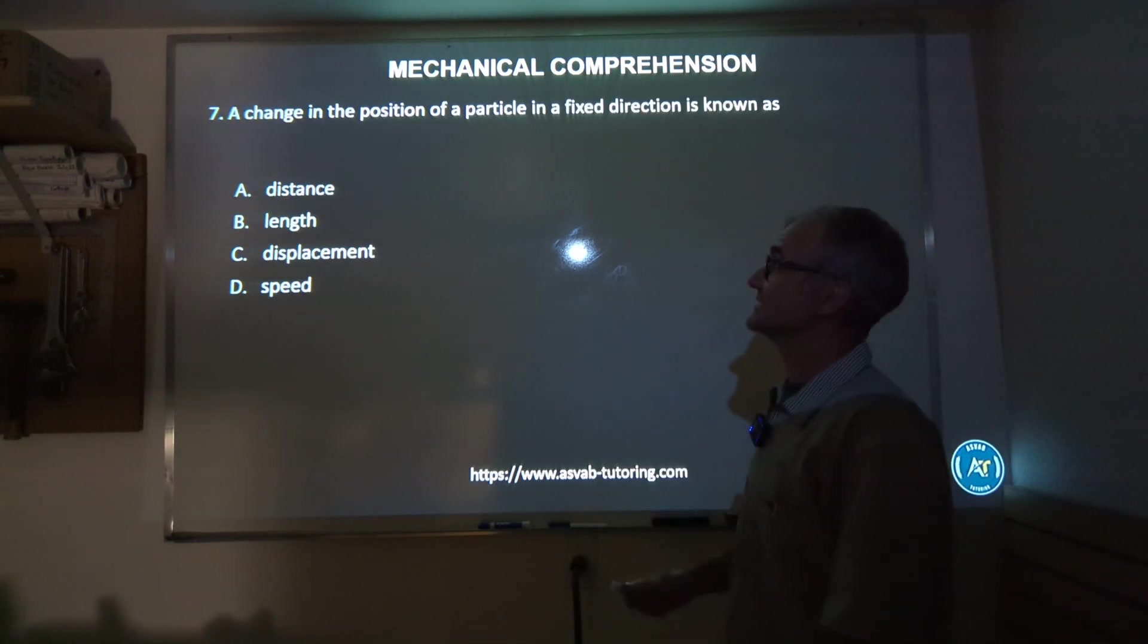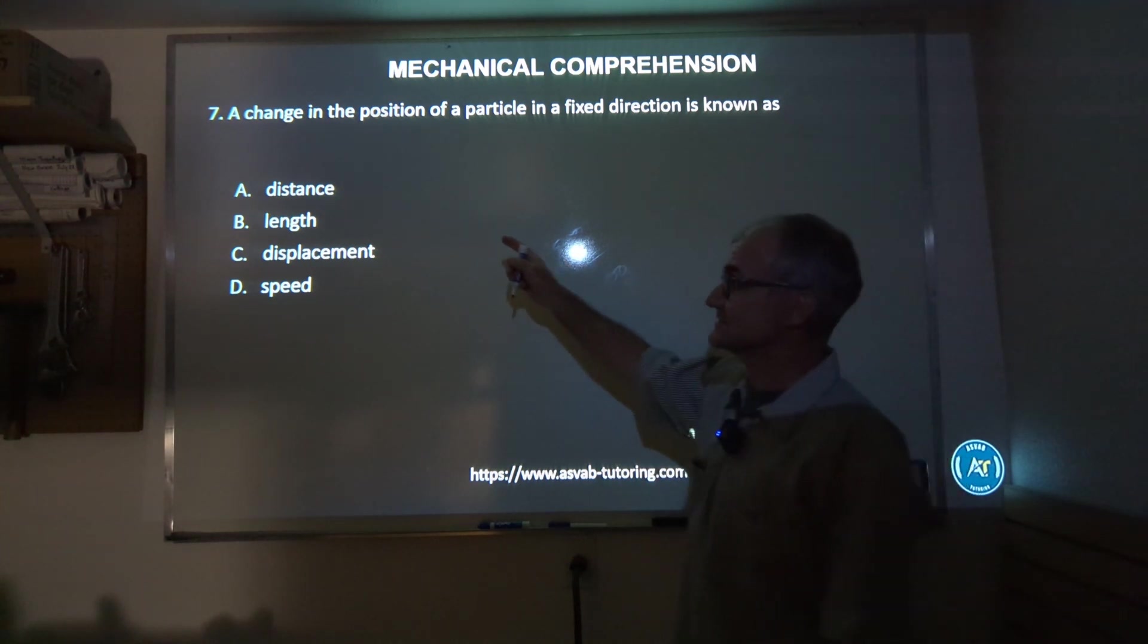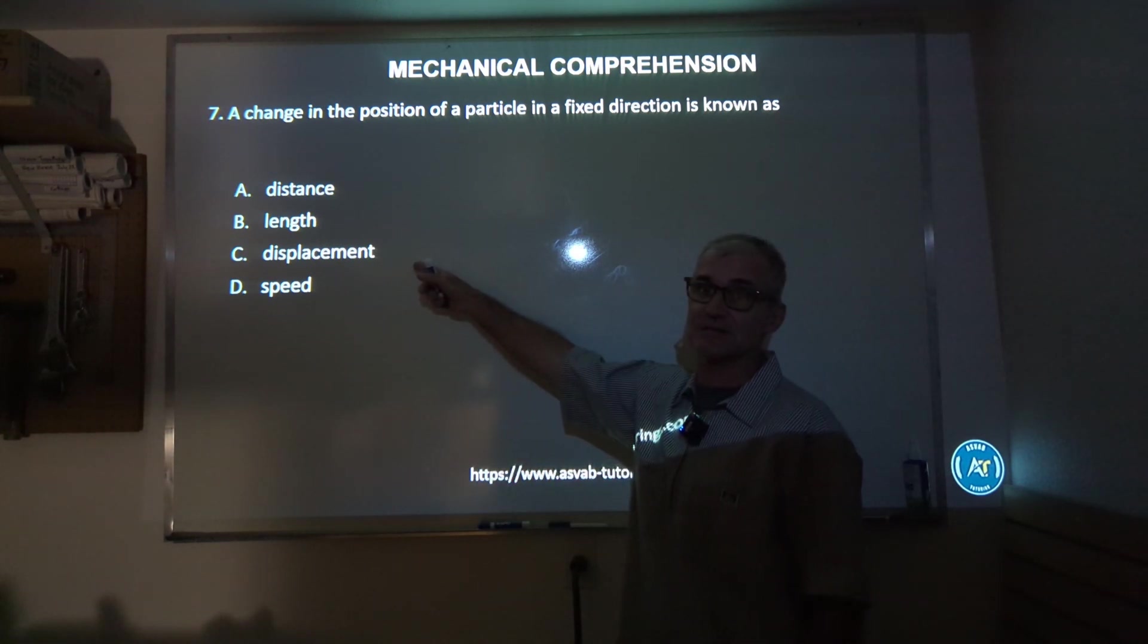Number seven: a change in the position of a particle in a fixed direction is known as distance, length, displacement, or speed. This is kind of a vector terminology. A vector has both magnitude and direction. Its amount of travel is called its displacement. So correct answer, answer C, displacement.